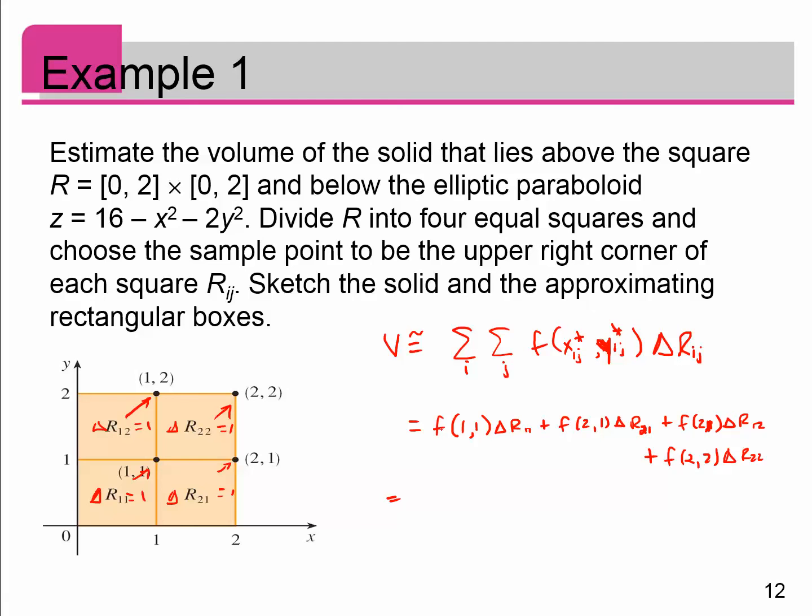What I actually end up doing is finding the value of f at (1, 1). So plug in (1, 1) into that: 16 minus 1 minus 2 is 13 times 1. Plus, plug in (2, 1) into this: 16 minus 4 is 12, minus 2 is 10 times 1. Plus this one at (1, 2), so 16 minus 1 is 15, minus 2 times 2 squared, which is minus 8, so 15 minus 8 is 7 times 1. Plus this one up here, which is f at (2, 2): 16 minus 4 is 12, 12 minus 8 is 4, so 4 times an area of 1. So 13 plus 10 plus 7 plus 4 gives me 34, and there is my approximate volume under that surface.